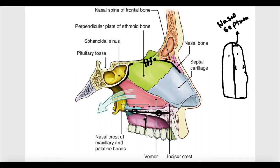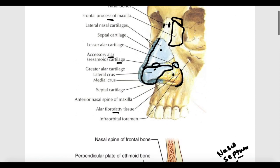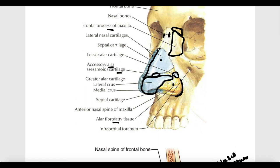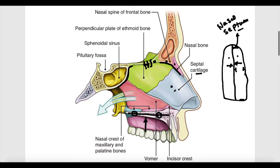The hard palate also forms the roof of the oral cavity, which will be discussed in another video. The medial wall of each half of the nasal cavity is formed by the nasal septum, which is composed of three parts. The most anterior part is formed by an inward extension of the septal cartilage, which we can also see from the outside.